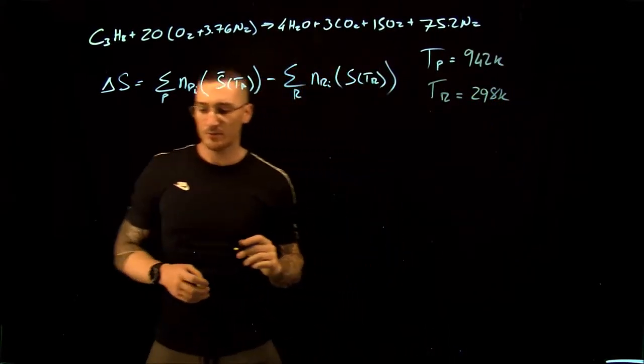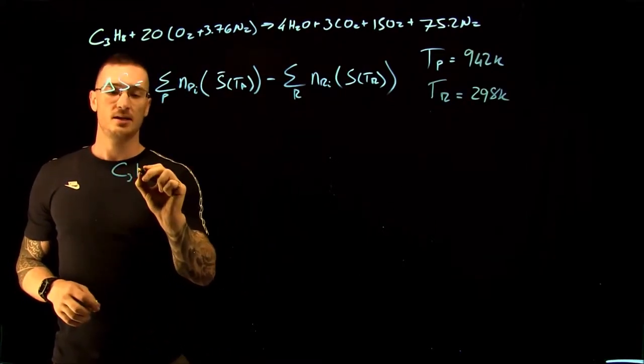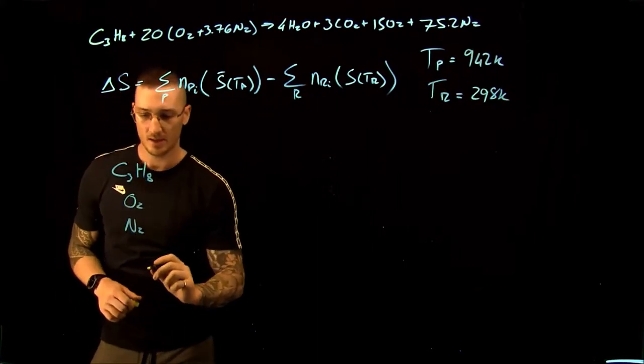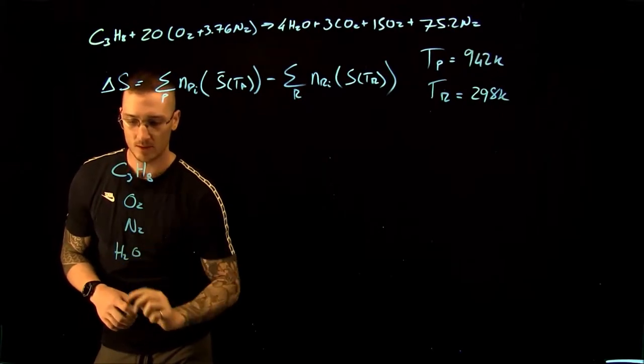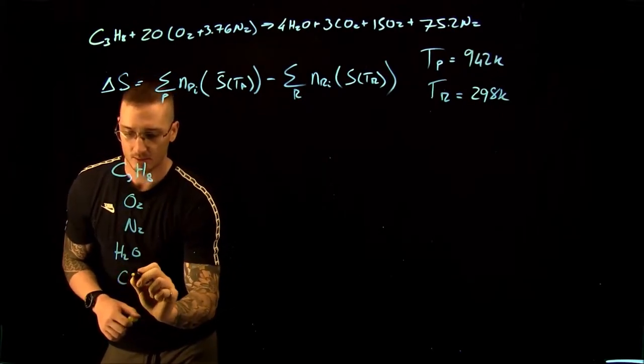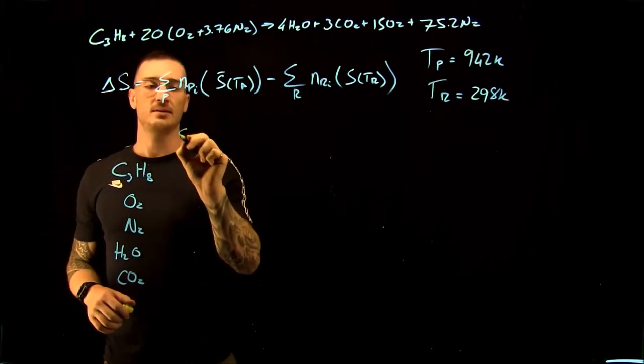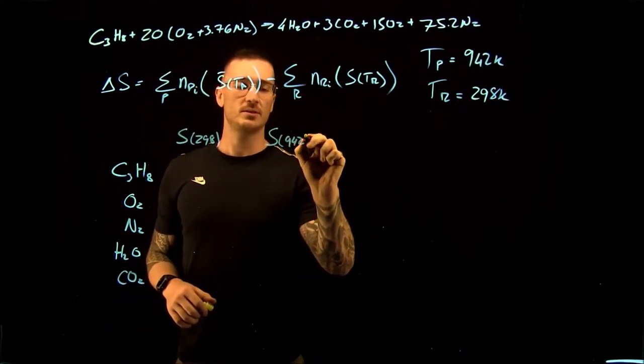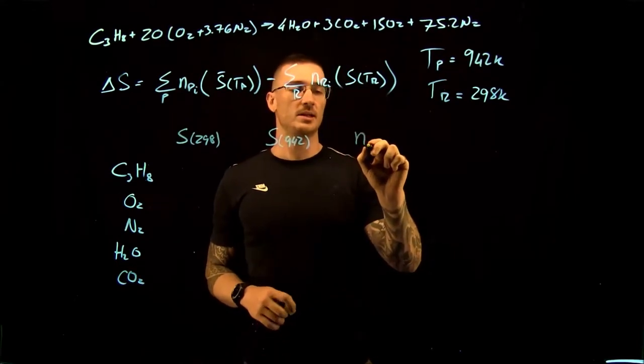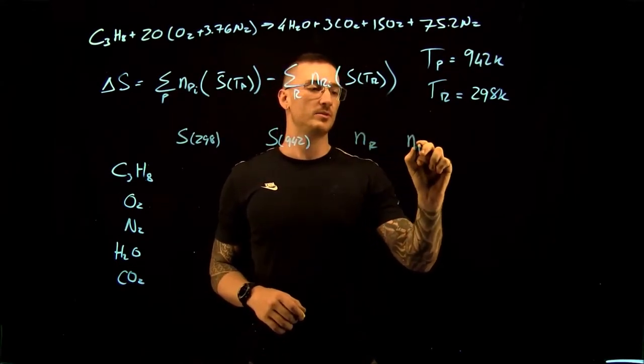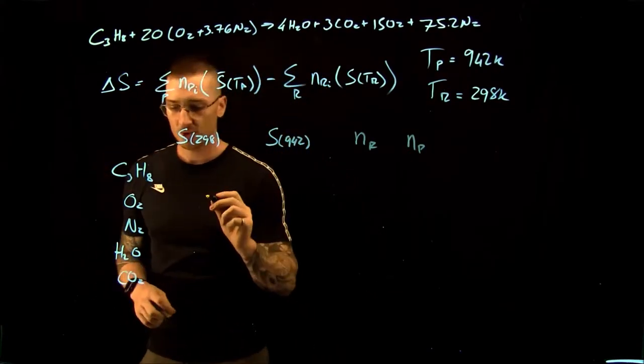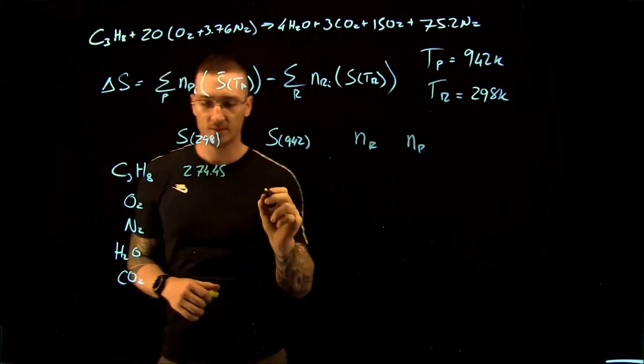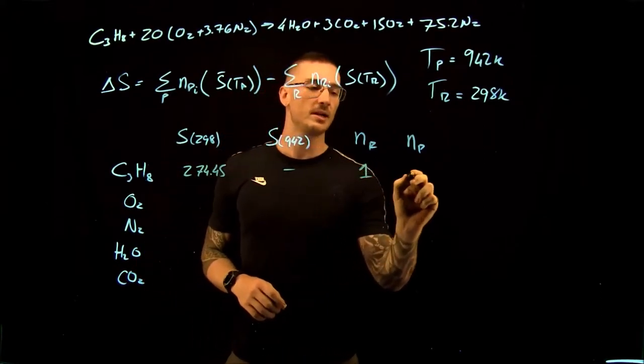Now if we draw out our little table, we have C3H8, O2, N2, H2O, and CO2. Then we have the entropy at 298, the entropy at 942, the number of moles in our reactants, and the number of moles in our products. So the entropy for C3H8 is 274.45, read from our table. We don't need it at 942. We have 1 mole in our reactants, none in our products.